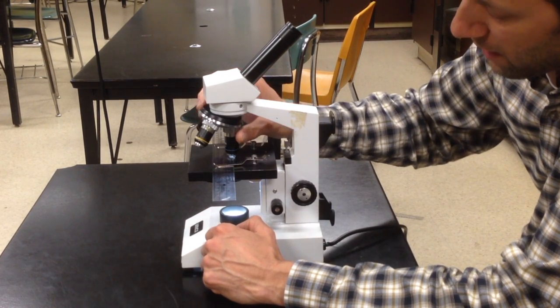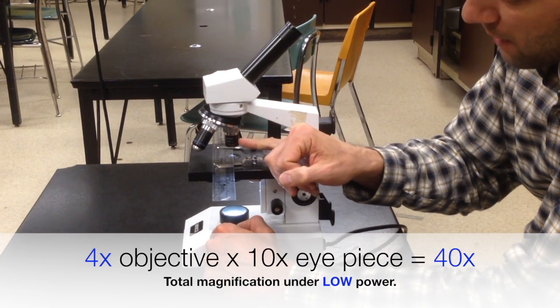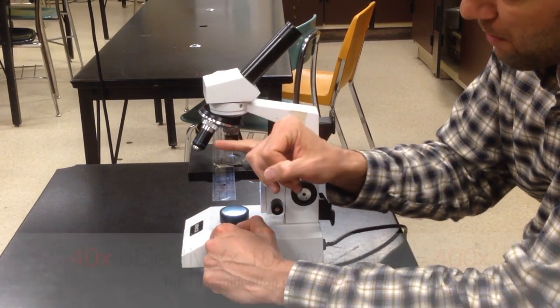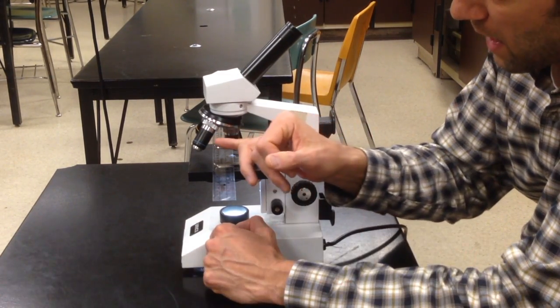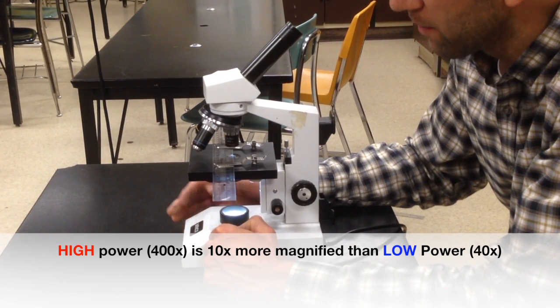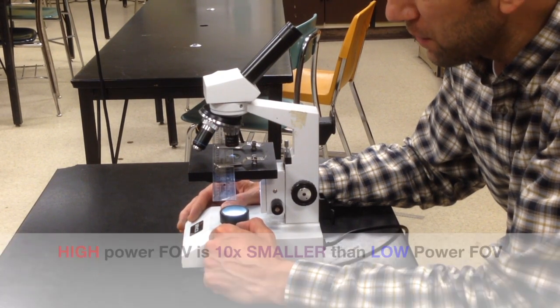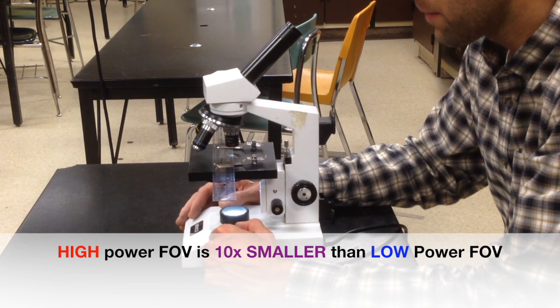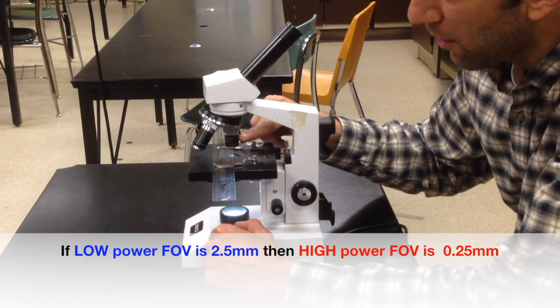But what you do know is that low power is 4x magnification times the eyepiece, which makes it 40x magnification, and high power is 400x magnification. Since high power is 10 times more magnified than low power (400 is 10 times more than 40), that means that your field of view is going to be 10 times smaller. So all you have to do to find your field of view under high power is divide your field of view under low power by 10.